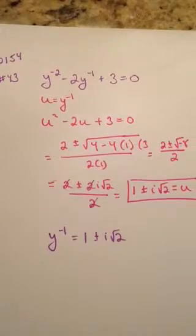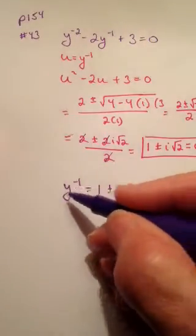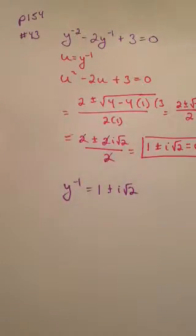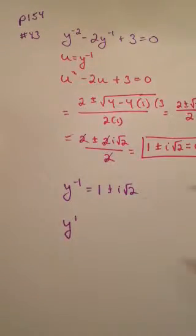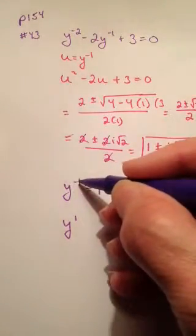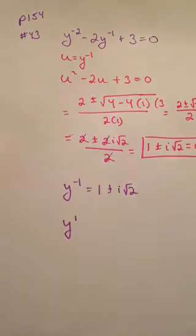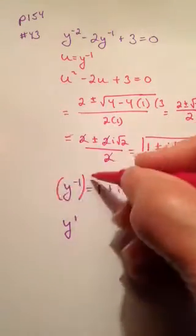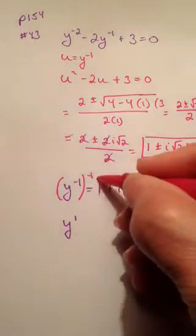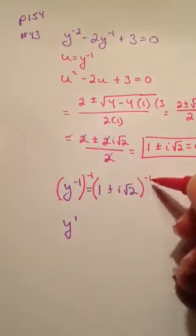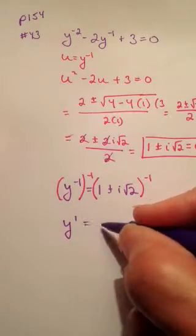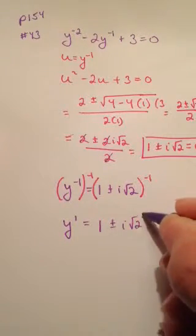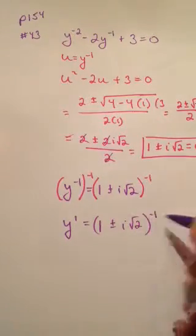Now our goal is to get y by itself. What do I have to do to y to the negative 1 in order to make it y to the 1st? That's just y. I can raise it to the negative 1 power, because negative 1 times negative 1 is positive 1, and y to the 1st is simply y. So on this side, I have 1 plus or minus i root 2 to the negative 1 power.